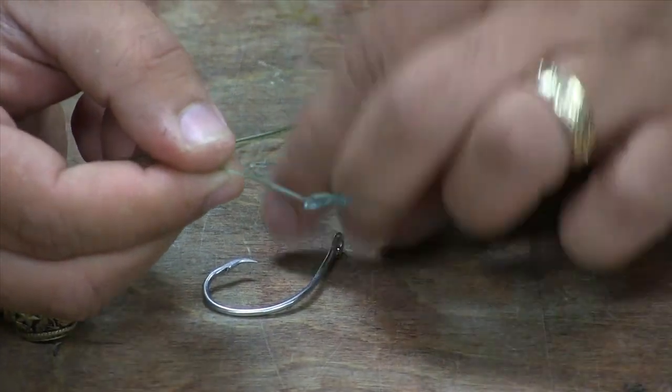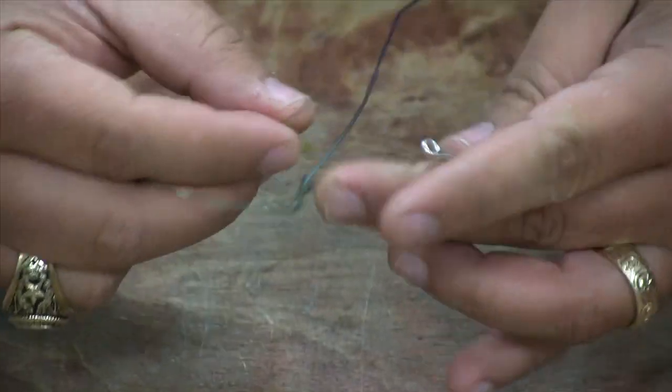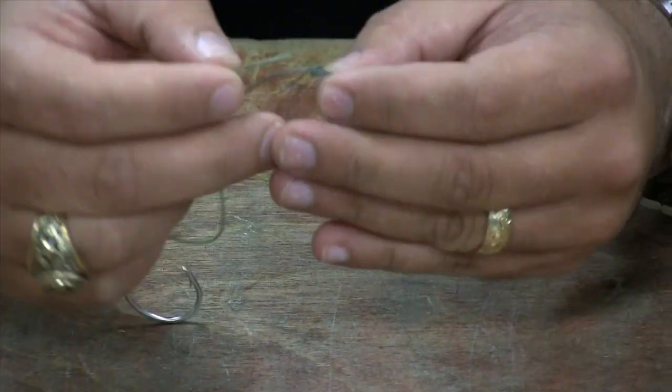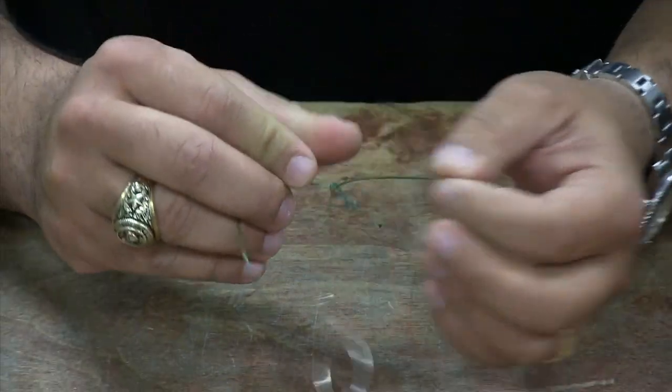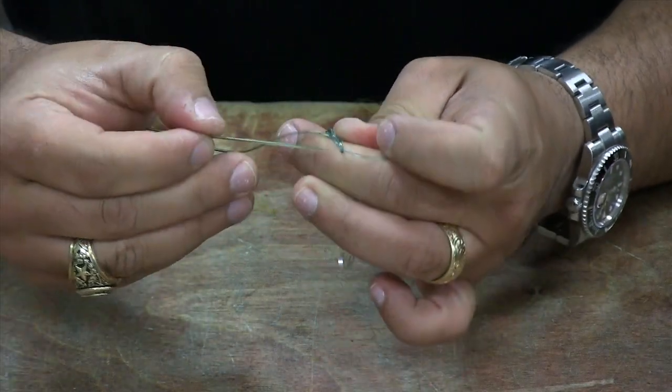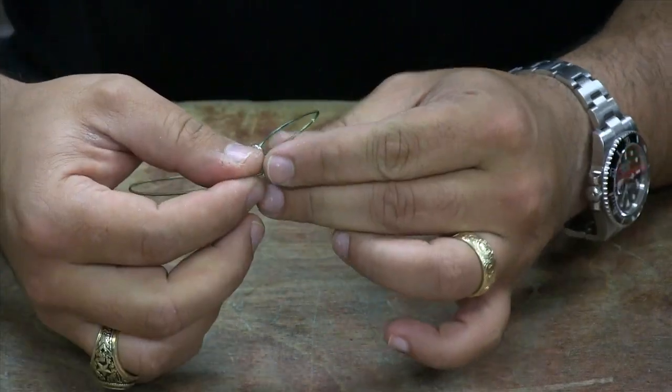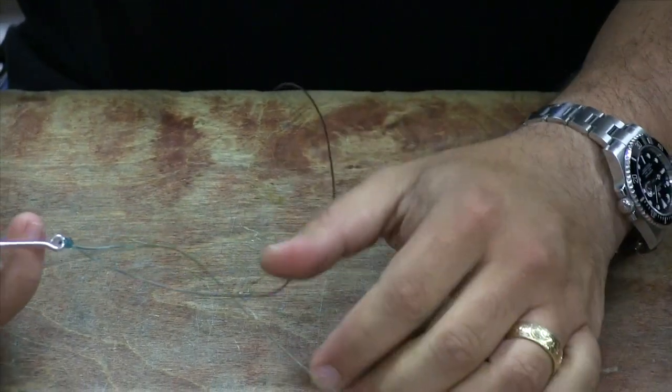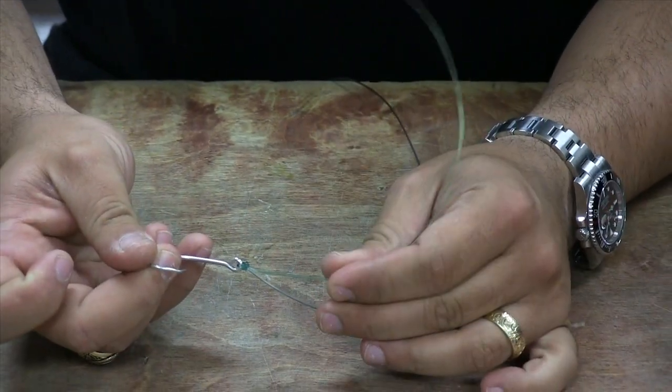That's what you want right there. Take your hook or whatever you're tying on there, slide it on. Follow the path of the main line in and out. You're then going to use the tag end to cinch that knot down. See how it rolled over? Knot rolls over.